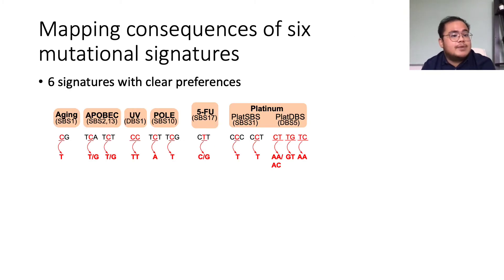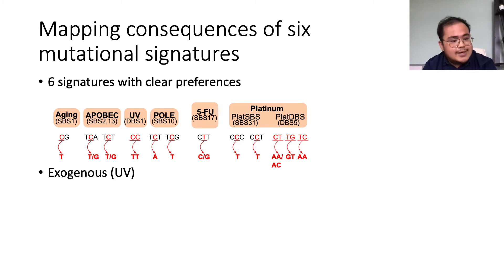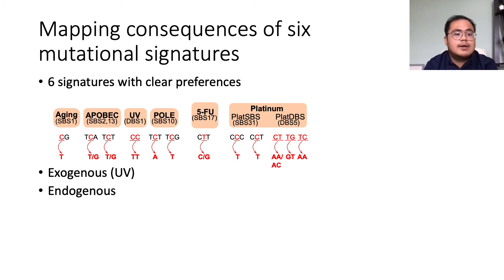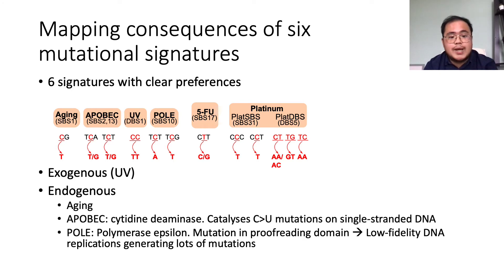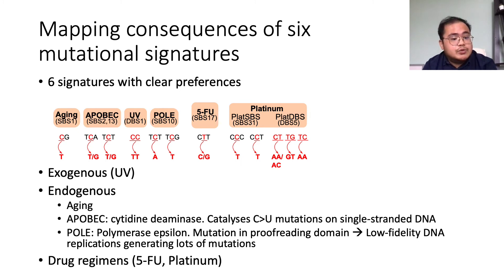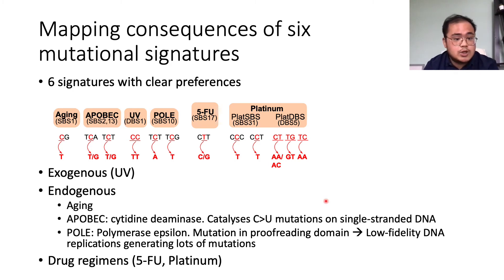In this work, we are considering six mutational signatures, each with a clear preference for the types of DNA motifs they target. These signatures cover some exogenous exposures such as UV radiation, endogenous mutational processes such as aging, some enzymes which generate sequence-specific mutations on DNA, and signatures associated with drugs. Both 5-FU and platinum are DNA intercalating agents used in chemotherapy of tumors, and in each of these cases they tend to be associated with mutations occurring in a particular DNA sequence context.